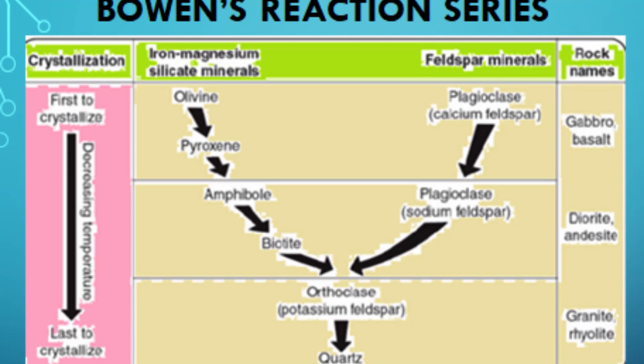Overall, Bowen's Reaction Series provides a useful framework for understanding the complex processes that govern the formation of igneous rocks. By studying the sequence in which minerals crystallize out of magma, geologists can learn a great deal about the history of volcanic and plutonic processes, and gain insights into the formation and evolution of the Earth's crust.